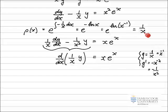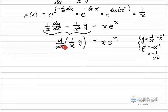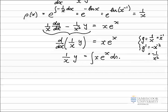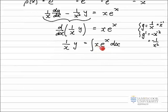We now see that we've got a single function of y. To get y by itself, we integrate both sides and rearrange for y. Integrating the exact derivative with respect to x leaves us with (1/x)y, and on the right-hand side we need to integrate x e to the x dx. Looking at this integral, I see it's a product of two functions of x, so I'm going to use integration by parts.